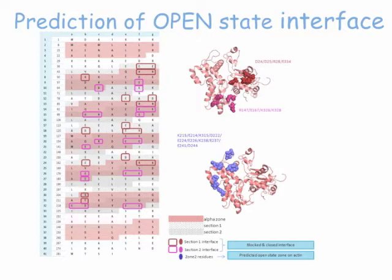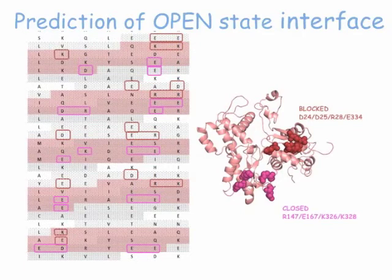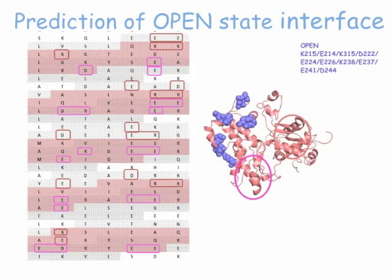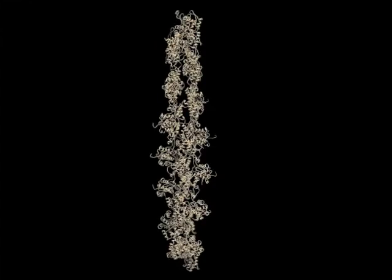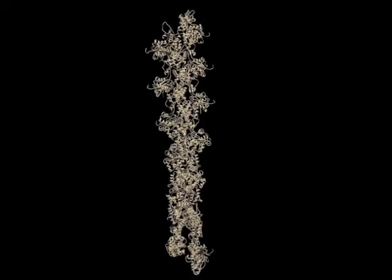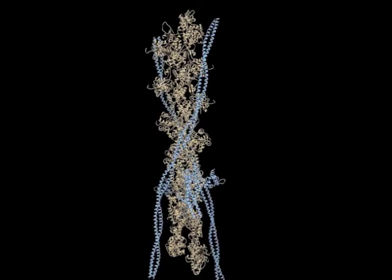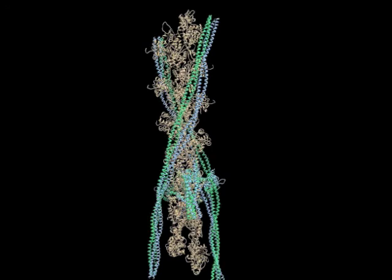Here you can see the tropomyosin sequence arranged in heptad repeats on the left, with pseudorepeats shaded, and on the right we see the residues involved in binding — in the block state in dark red, in the closed state in pink, and in the open state in blue. This movie shows tropomyosin interacting with different regions of the actin surface in the three states: blocked in blue, closed in green, and open in purple.